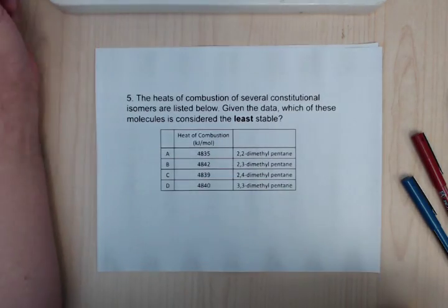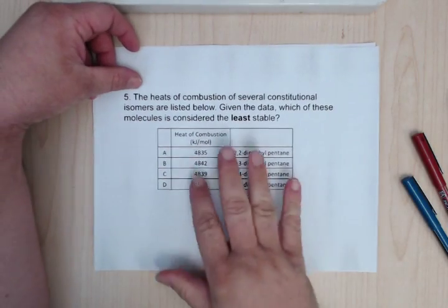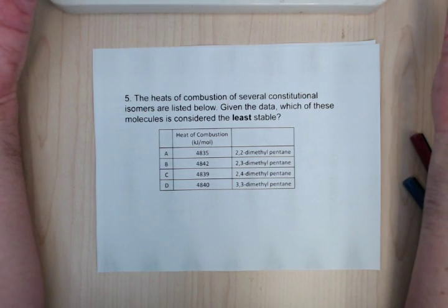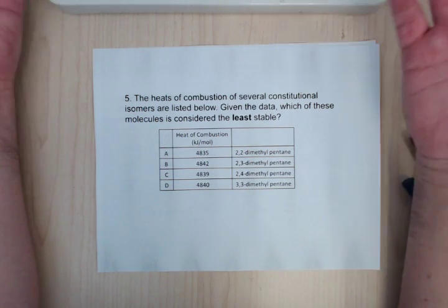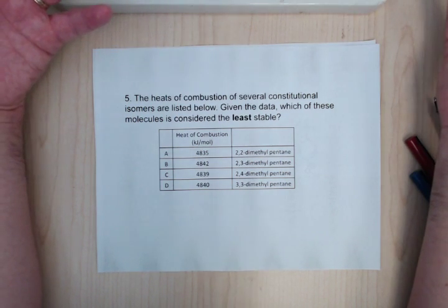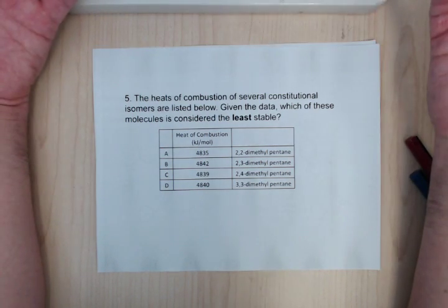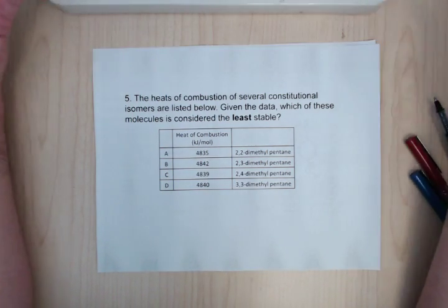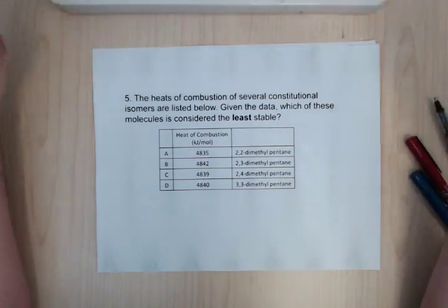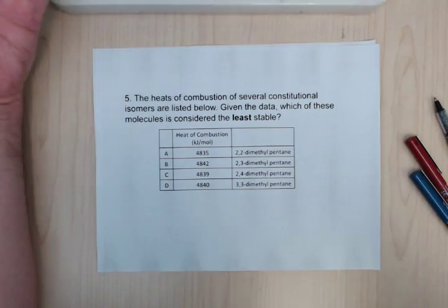Okay, so for heats of combustion, this is a classic question on these things. You get a list like this and it's saying which one is the least stable. So what's happening is the more stable you are, when you burn it, the less energy you give off. So that means the least stable is going to give the most energy. Sort of think about it as a bomb. You want to pack as much unstable stuff in there so when it goes off, it gives off as much heat as possible.